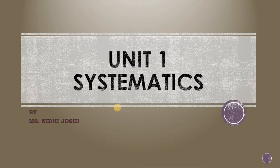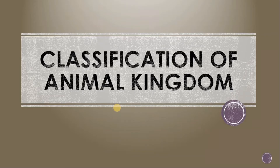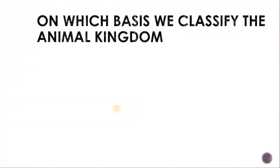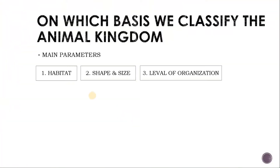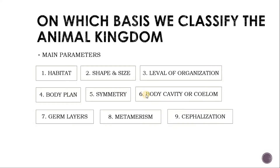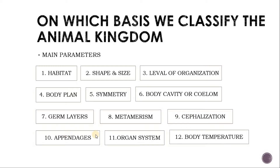Now we jump onto today's topic. In the previous video we discussed Unit 1 and classification of the animal kingdom on the basis of various parameters. In the previous session we already discussed the first five parameters: habitat, shape and size, level of organization, body plan, and symmetry. In today's session we are going to discuss further parameters: body cavity or coelom, germ layer, metamerism, cephalization, appendages, organ system, and body temperature.